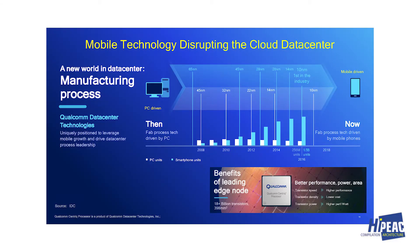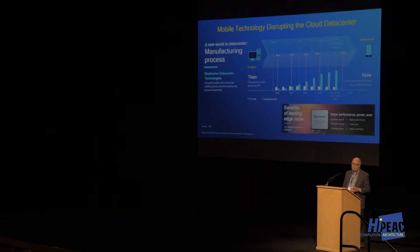I spent 12 years of my life at Intel, where we drove new process technology driven by the large volume of PC processors. In 2008, the volume of PCs was maybe twice as high in the 45-nanometer generation compared to smartphones, but over time the PC unit volume has flattened or even declined, while smartphone volume has taken off. Investment in new process technologies is now driven more by the smartphone industry.